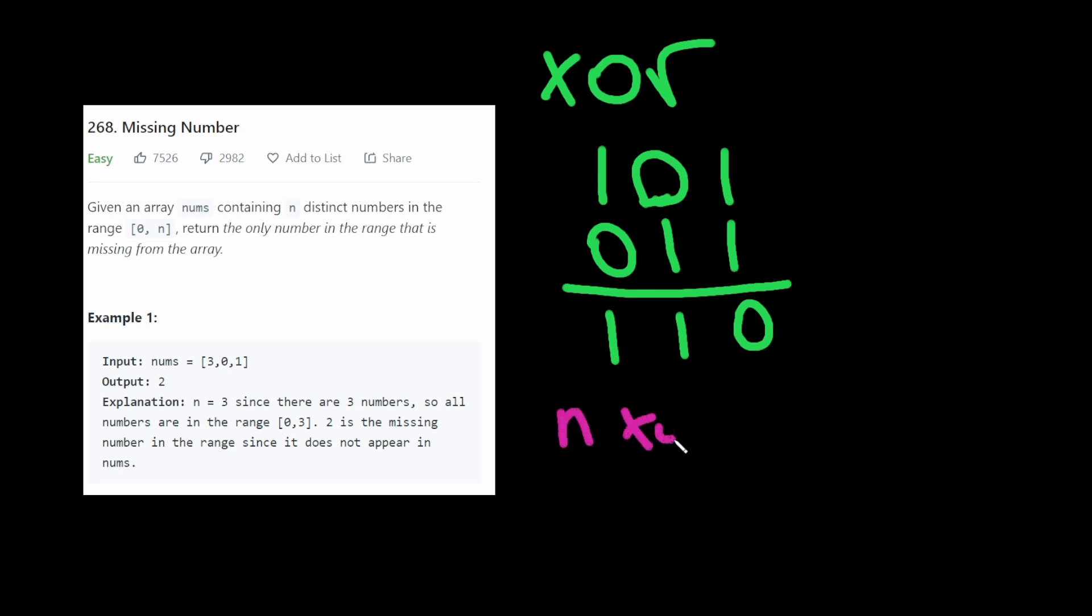Any number XOR by itself is equal to 0. First, let's look at an example that shows this. This is 0, 0, 0. So you can see that it would apply for any number.